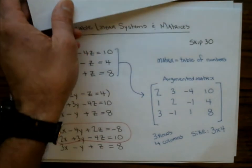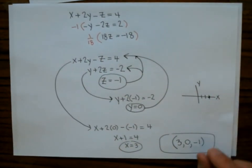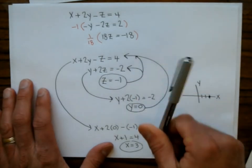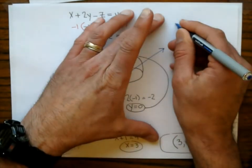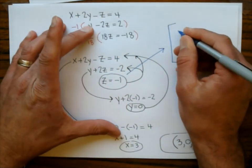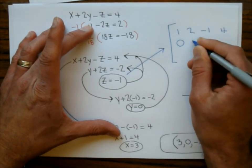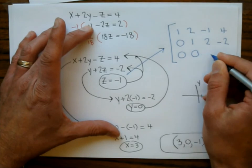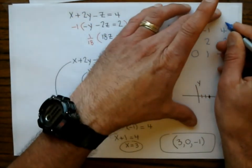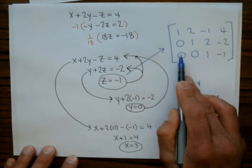If we had done matrix row operations on Problem 1, we would have ended up getting the matrix: row 1 is 1, 2, negative 1, 4; row 2 is 0, 1, 2, negative 2; row 3 is 0, 0, 1, negative 1. We would have ended up with this little triangle of zeros, which is our goal, and then we could do back substitution. Some books draw a vertical line to represent the equal sign — this column is x coefficients, then y, then z, then the right-hand side numbers.